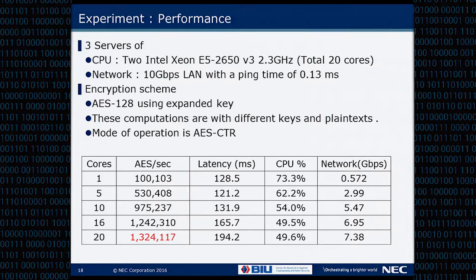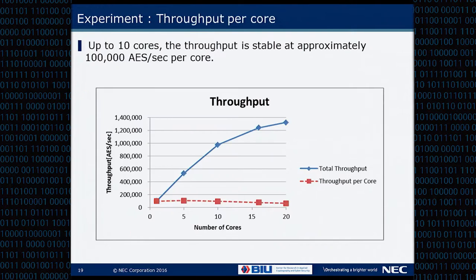Here are our results. We have three servers, each with a CPU composed of two Intel processors, giving 20 cores per machine, connected by a 10 Gbps network with a ping time of 0.13 milliseconds. We compute AES with expanded key for different keys and different plaintexts, in AES counter mode. With a single core, we achieve 100,000 AES per second.